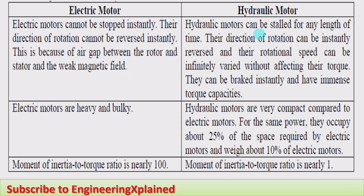Hydraulic motors can be stalled for any length of time. At any time they can be stopped, their direction of rotation can be instantly reversed, and their rotational speed can be infinitely varied without affecting the output torque — the mechanical power. They can be braked instantly, stopped instantly, and have immense torque capacity.